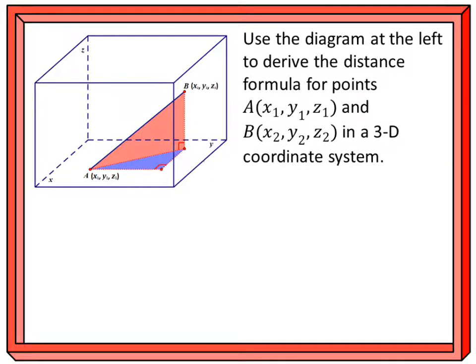All right, so this should be enjoyable. We're trying to find a distance formula for two points that are in space, as in three dimensions, x, y, and z. Use the diagram at the left to derive the distance formula for points A at x1, y1, z1, and B at x2, y2, z2 in a 3D coordinate system. I drew you a little picture to go along with it.